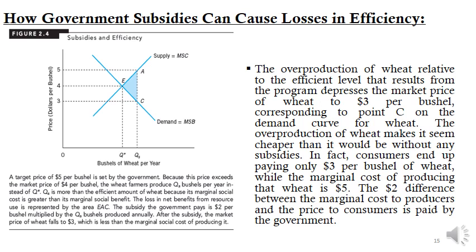In addition to the loss in net benefits from the subsidy-induced distortion in resource use, the target price program also costs the government $2 per bushel multiplied by the QS bushels produced per year. The overproduction of wheat relative to the efficient level depresses the market price to $3 per bushel, corresponding to point C on the demand curve. Consumers pay only $3 per bushel while the marginal cost of producing that wheat is $5 — the $2 difference is paid by the government.